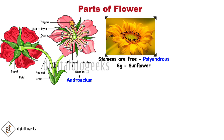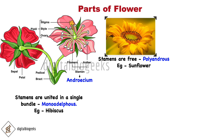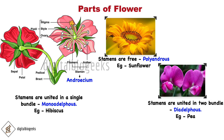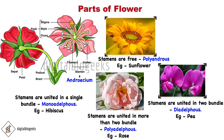Sometimes the stamens are joined as a bundle. If united as a single bundle, it is called monadelphous — like in china rose (hibiscus). In diadelphous flowers, the stamens are united in two bundles, often of different lengths — for example, pea. If there are more than two bundles, it is called polyadelphous — for example, rose.